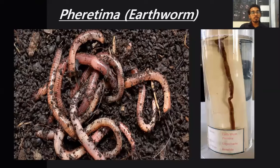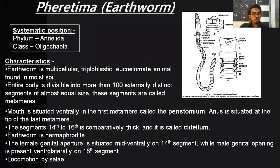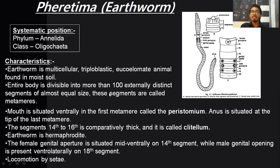The next specimen is the earthworm; the scientific name is Pheretima posthuma. Systematic position: it belongs to phylum Annelida, class Oligochaeta. Characteristics: the earthworm is a multicellular, triploblastic, eucoelomate animal found in moist soil. The entire body is divided into more than 100 externally distinct segments of equal sizes called metamers. The mouth is situated ventrally in the first metameric region and it is called the peristome.